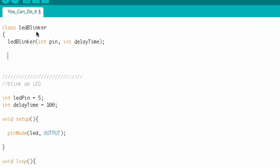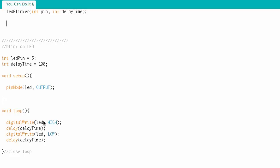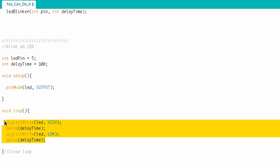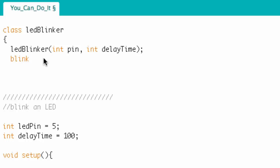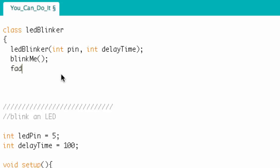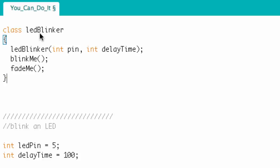There are also going to be functions associated with a class. We really have a couple of functions: digital write high and digital write low. What we would do is wrap all of this up into a simple function and call it blink me. And maybe we'd have another function called fade me, which would use pulse width modulation to fade the LED. So here is my class: LED Blinker, with a constructor and functions inside it.